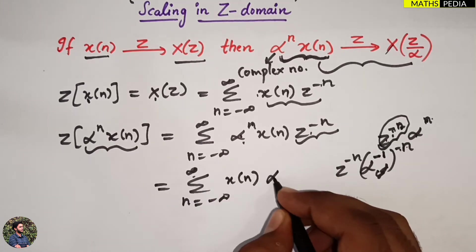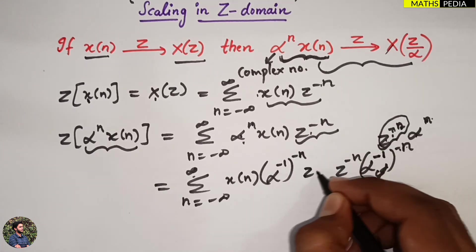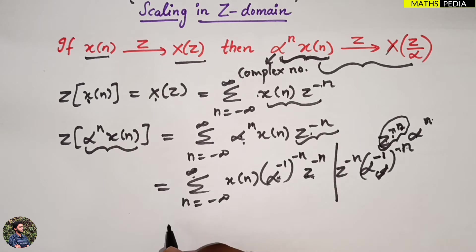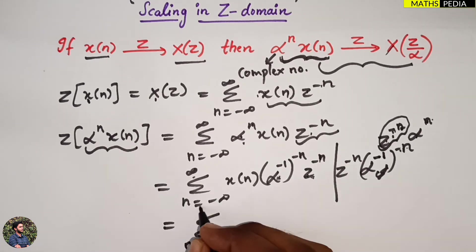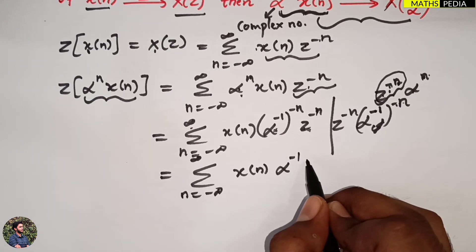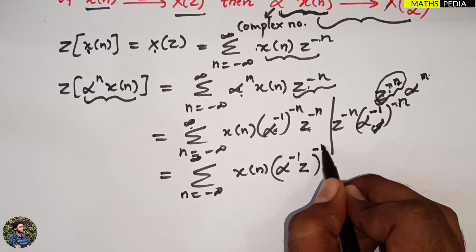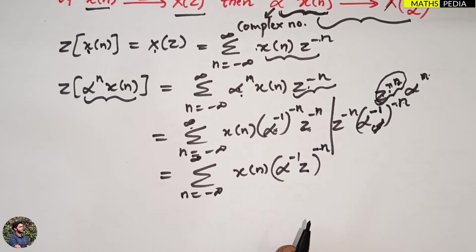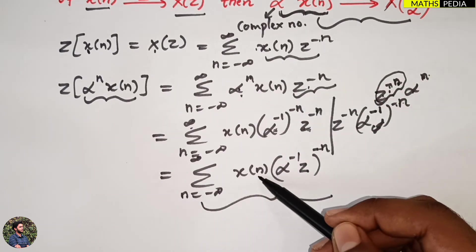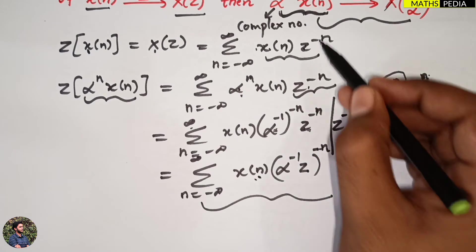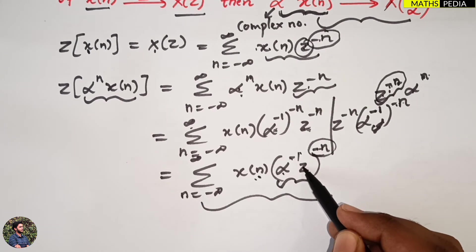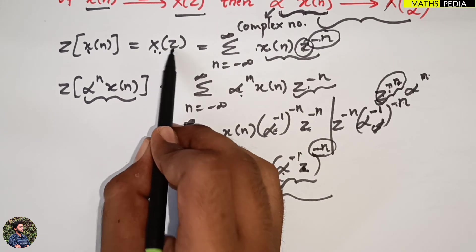So the summation becomes: summation from n = -infinity to infinity of x(n) times (alpha^(-1))^(-n) times z^(-n). Now I can combine these two terms since both are to the power -n, giving: summation from n = -infinity to infinity of x(n) times (alpha^(-1) times z)^(-n).